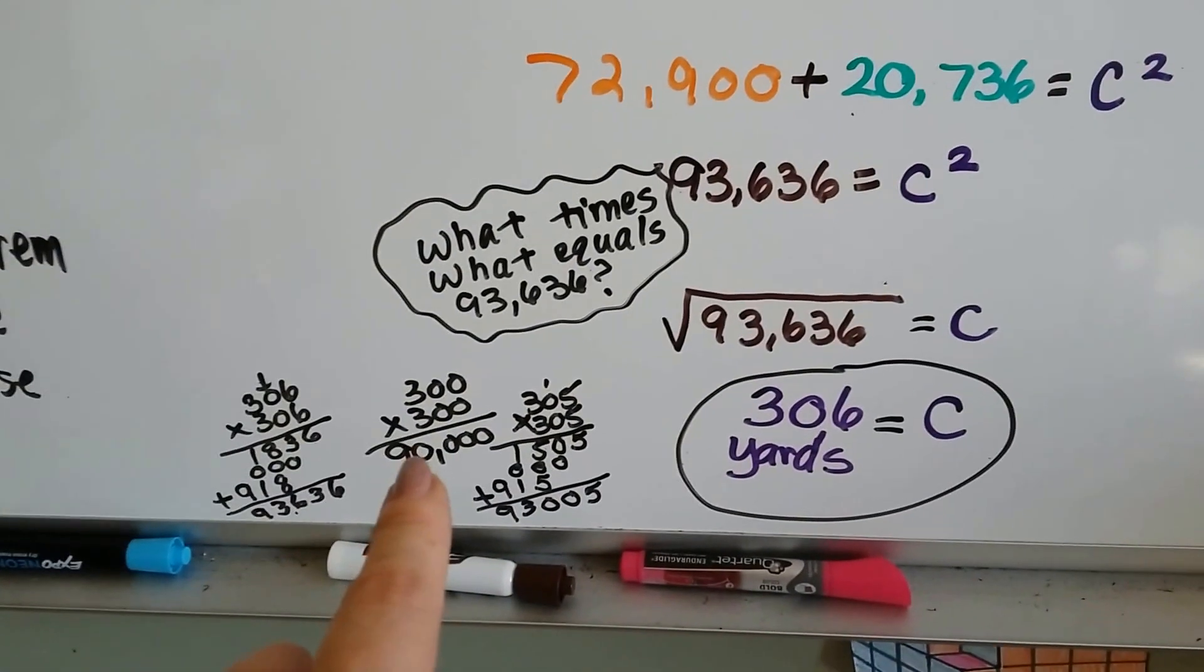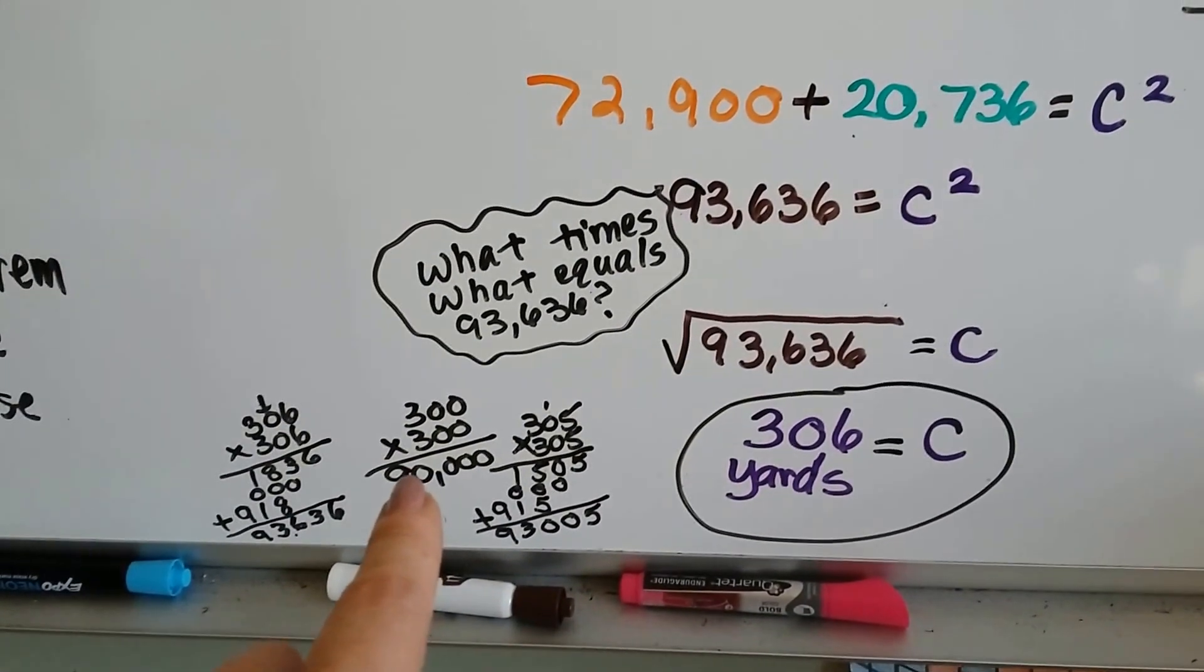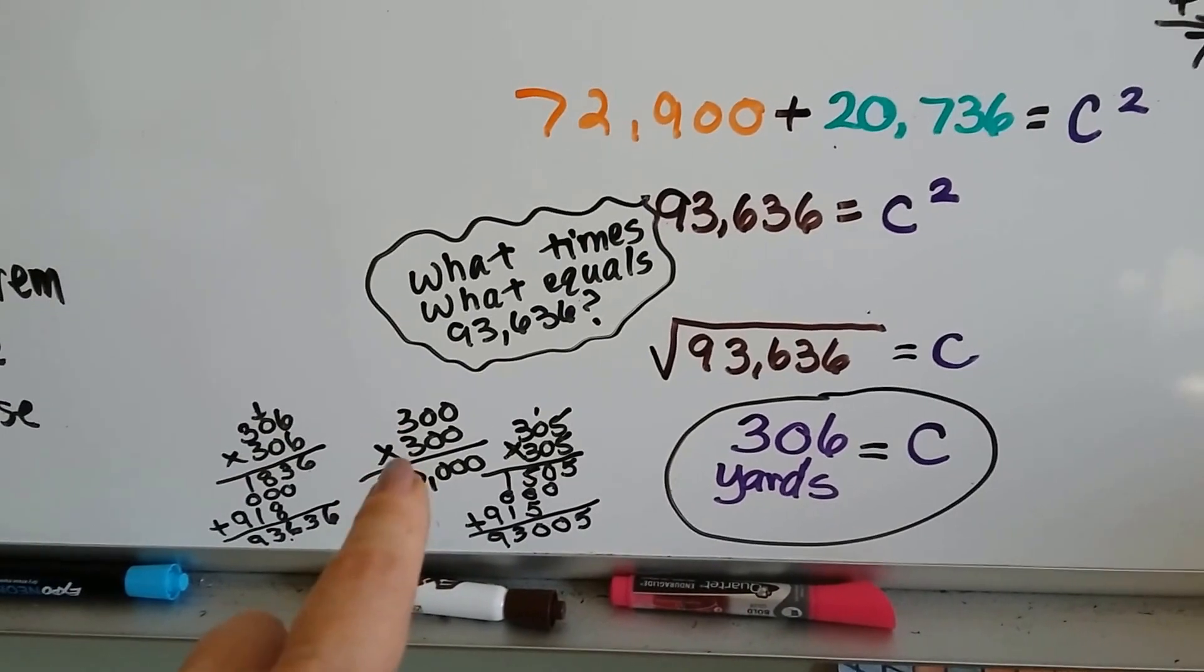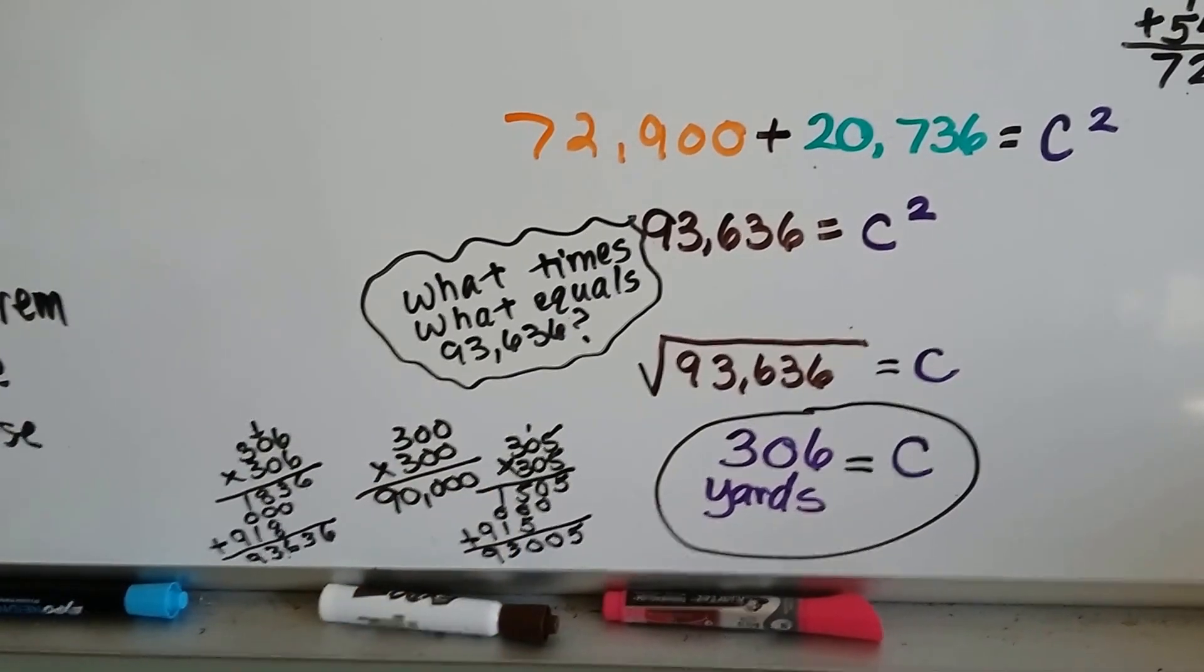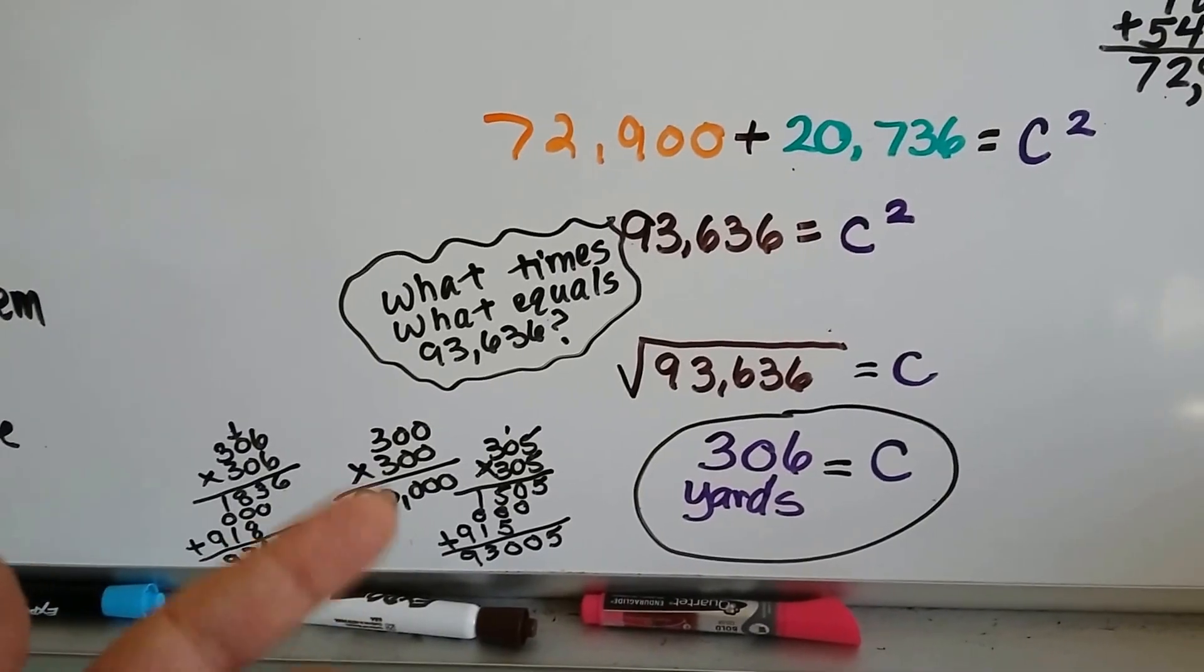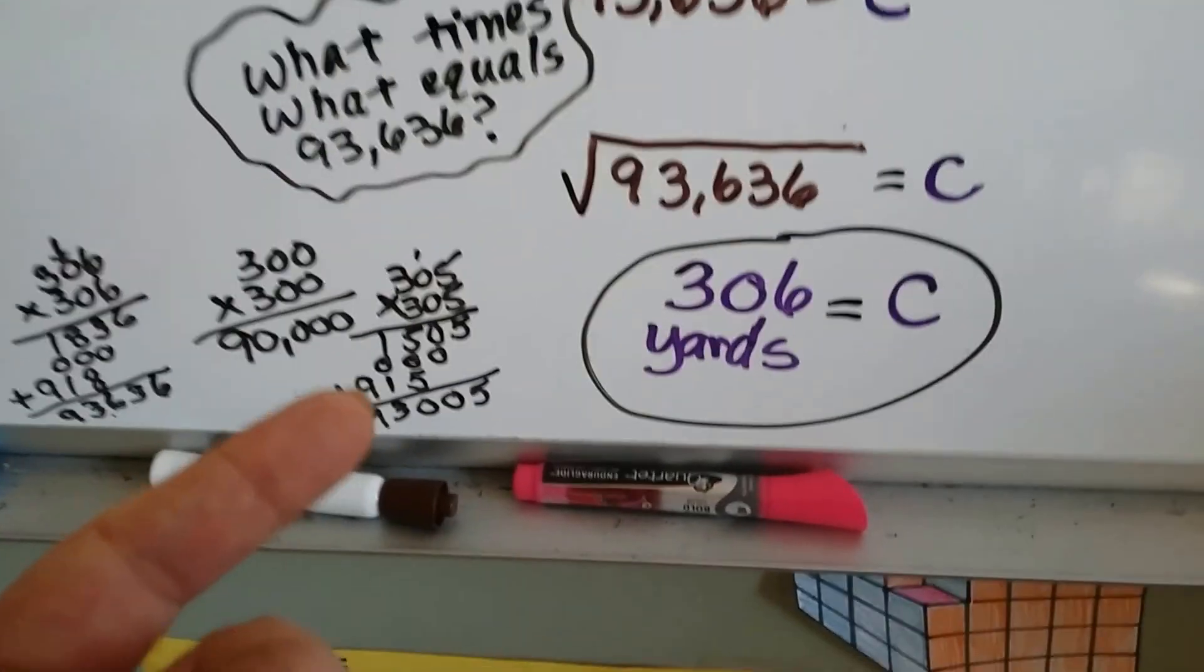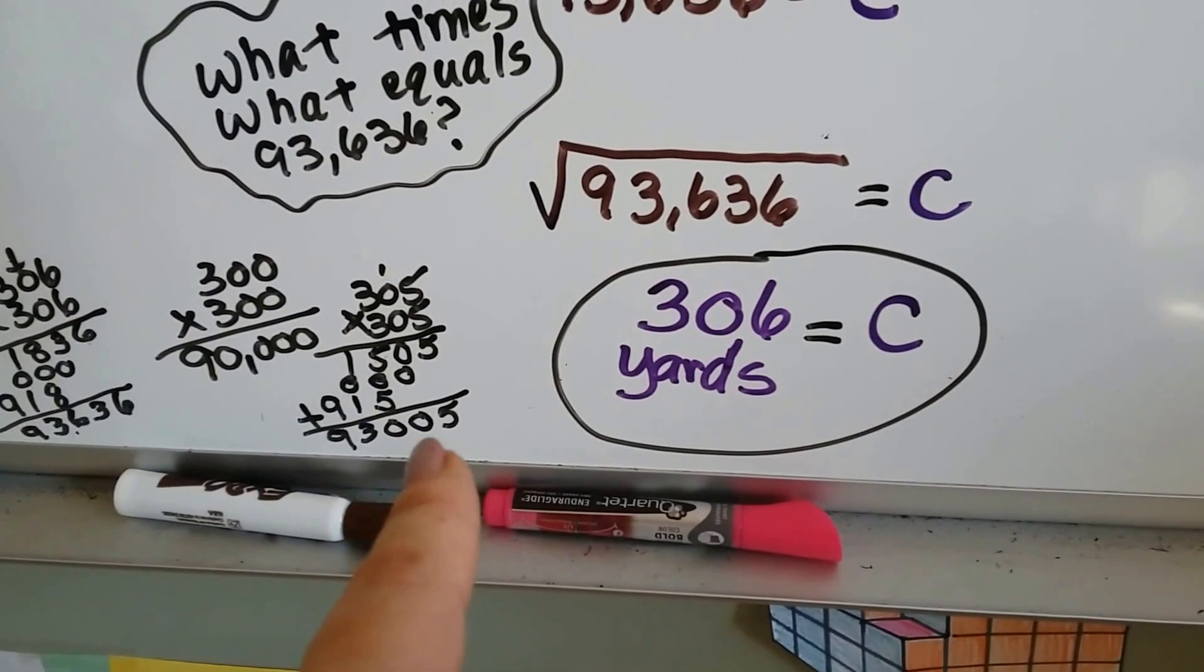Well, I know right off the bat that 300 times 300 is 90,000. It's 3 times 3 and 4 zeros. See? 9 and 4 zeros. So I thought, okay, well, I'm getting close.